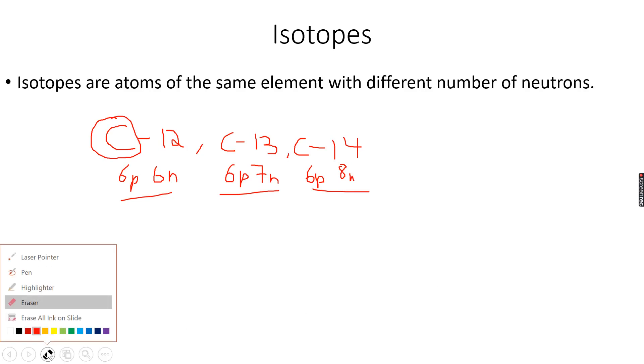This brings us to a very important conclusion that regardless of the number of neutrons, the number of protons for an element will always remain the same.